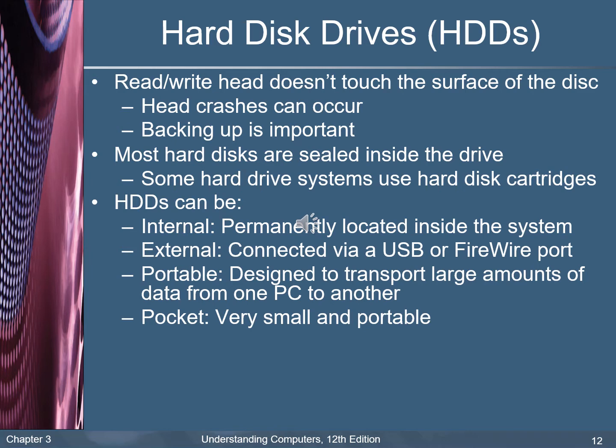The read/write head does not touch the surface of the disk — if it does, we have a head crash. Backing up is important; you should have a strategy for backing up your files or the content of your disk. Most hard disks are sealed inside the drive. Some hard drive systems use hard disk cartridges. HDD can be internal, permanently located inside the system cabinet, or external connected via a USB or FireWire port, or portable — designed to transport large amounts of data from one PC to another, including very small pocket hard drives.